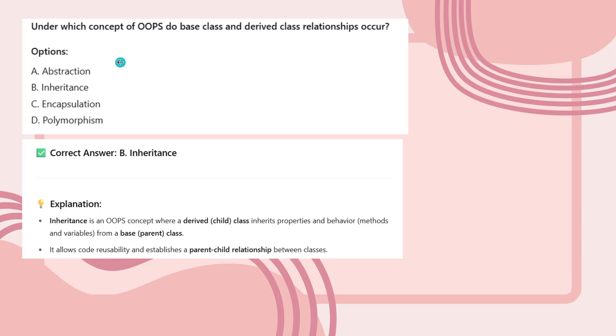This is from the OOPs concept: Under which concept of OOPs does the base class and derived class relationship occur? The answer is Inheritance. Only in inheritance concepts does the child class inherit properties from the base class. Inheritance is an OOPs concept where a derived child class inherits properties and behavior (methods and variables) from the base parent class. It allows code reusability and establishes parent-child relationships between classes.